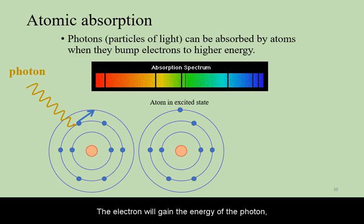The electron will gain the energy of the photon and jump to a higher orbit. The light will be subtracted out from the spectrum at the exact energies that the electron gained. These discrete energies will show up as discrete frequencies of light in the spectrum.